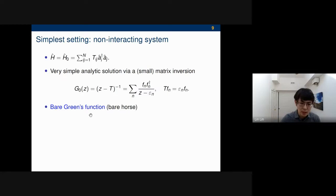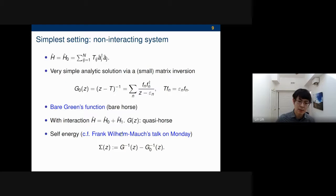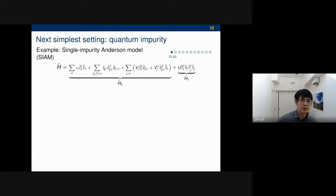The interesting part would be with interaction, where this GZ becomes the quasi-horse. We heard on Monday from Frank's talk that the important thing is the so-called self-energy. This sigma(Z) is defined to be the inverse of Z minus the inverse of G-naught. So this is not just a garbage collection term, but it actually has a lot of physical meaning.